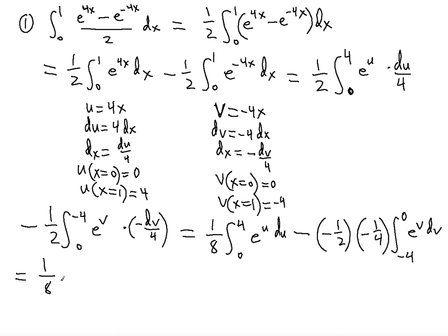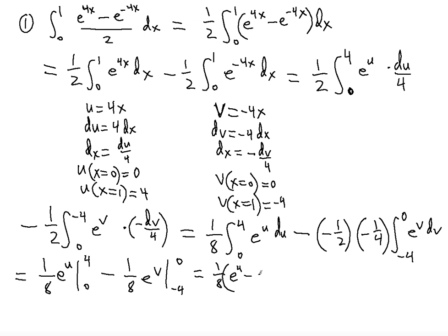Integrating the first part gives 1 eighth e to the u, evaluated from 0 to 4. For the second integral, three minus signs combine to give a net minus, so it's minus 1 eighth of e to the v evaluated from negative 4 to 0. Applying the Fundamental Theorem of Calculus: the first gives 1 eighth times (e to the 4 minus e to the 0), which is 1 eighth times (e to the 4 minus 1). The second gives minus 1 eighth times (e to the 0 minus e to the negative 4), which is minus 1 eighth times (1 minus e to the negative 4).